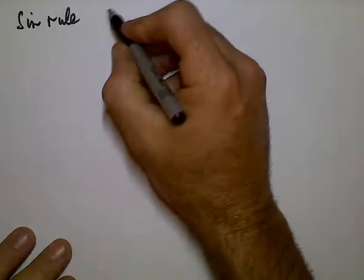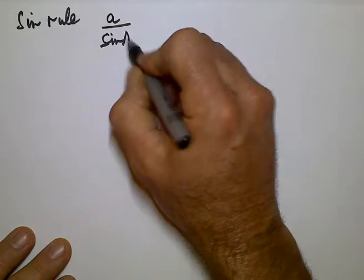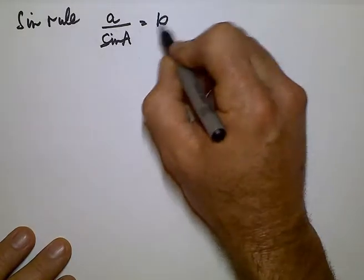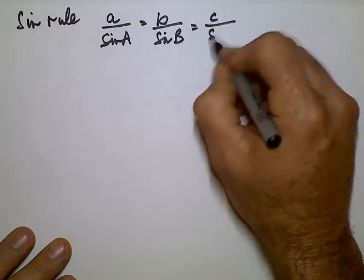I'd like to talk about the Sine Rule which is written A divided by Sine A equals B divided by Sine B equals C divided by Sine C.